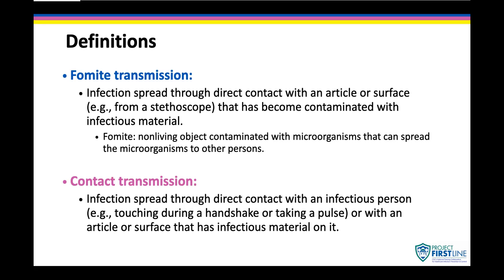When we talk about fomite transmission, we're talking about infection that is spread through direct contact with an article or surface — like a stethoscope — that has become contaminated with infectious material. Similarly, contact transmission is infection spread through direct contact with an infectious person, such as touching during a handshake or taking a pulse, or with an article or surface that has that person's infectious material on it. These concepts are really important when we start talking about cleaning and disinfection.